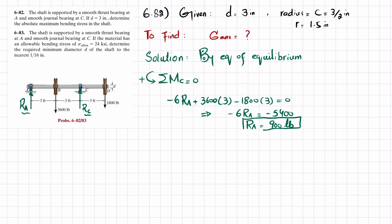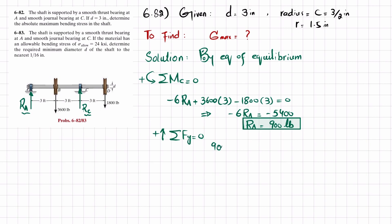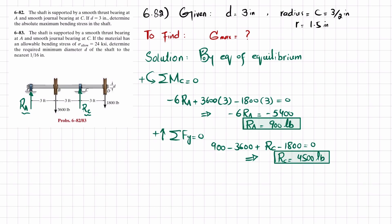Now we find Rc using the equilibrium condition that the sum of all forces in the Y-direction equals zero, taking upward forces as positive. We have Ra upward, Rc upward, minus 3600, and minus 1800. So: 900 - 3600 + Rc - 1800 = 0, giving Rc equal to 4500 pounds.